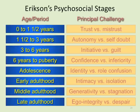Late adulthood is ego integrity versus despair. You're either going to look back and say 'I've lived a great life and achieved everything I wanted to,' or you're going to look back and feel you didn't do what you wanted to. These are the major psychosocial stages of Erikson — all stages that everybody goes through in different ways.